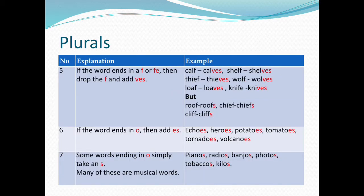5. If the word ends in F or FE, then drop the F and add VES — calf/calves, thief/thieves, loaf/loaves, shelf/shelves, wolf/wolves, knife/knives. But note: roof/roofs, chief/chiefs, cliff/cliffs.